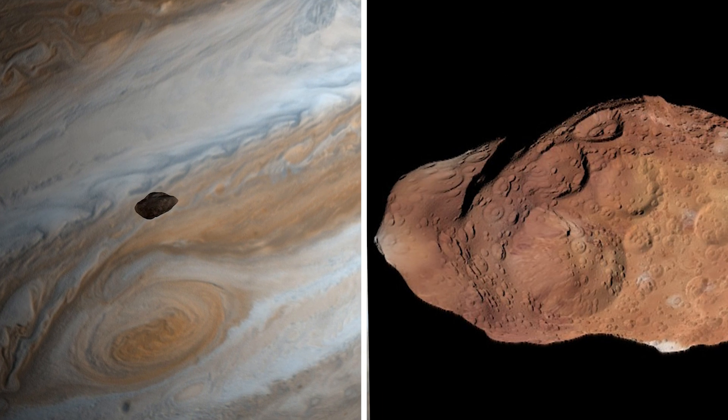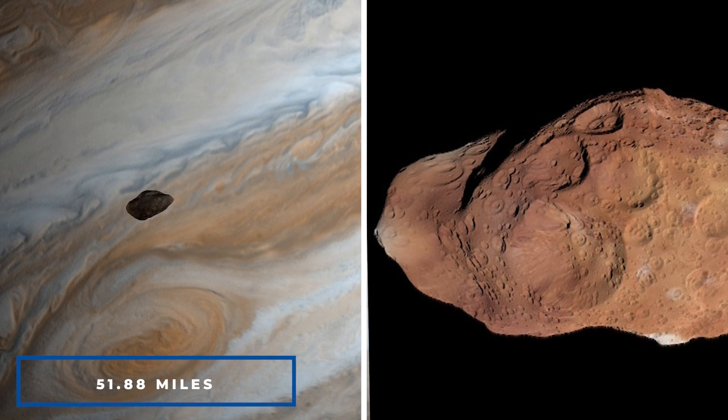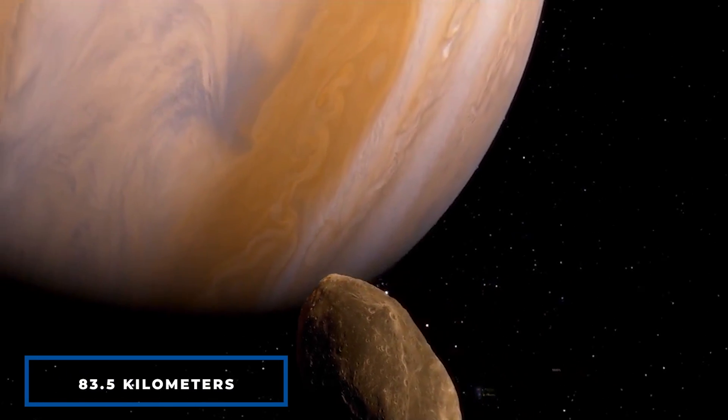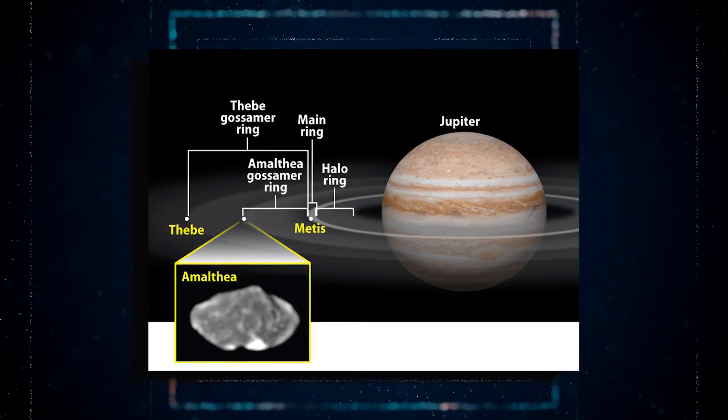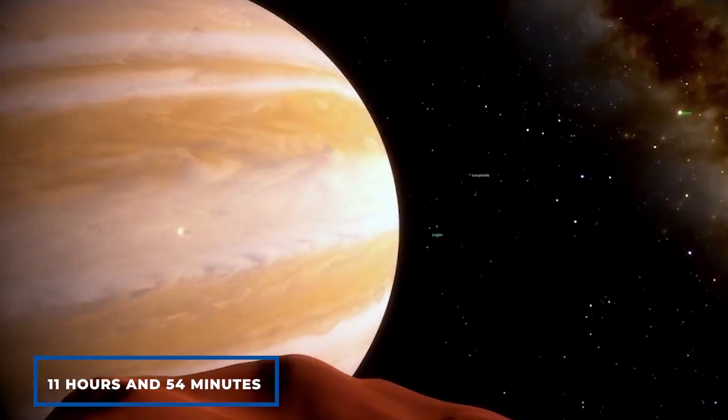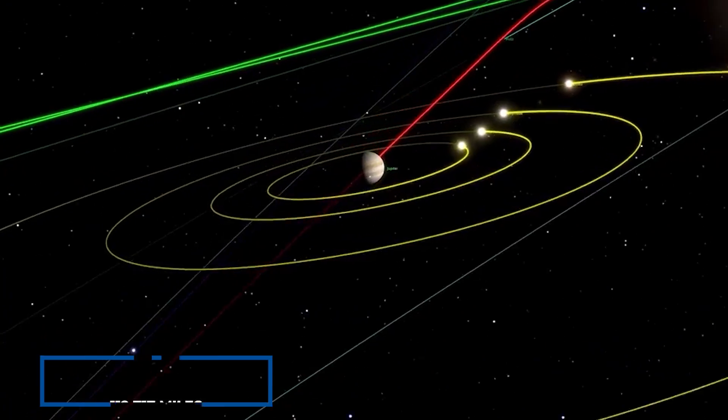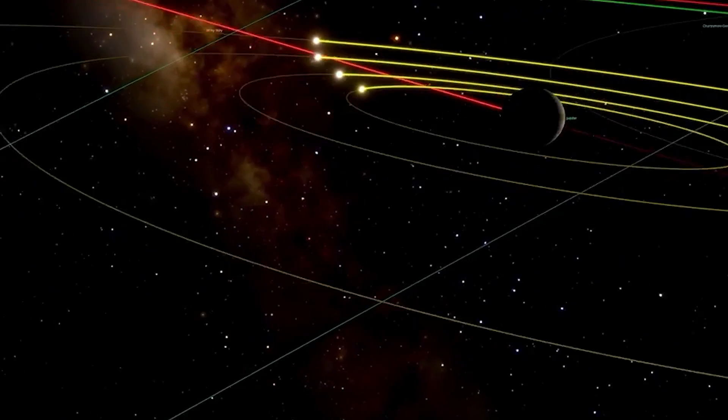According to NASA, it is a rocky body with a mean radius of roughly 51.88 miles. It has a potato-like form, belongs to the inner moon group with Metis, Adrastea, and Thebe, and circles Jupiter in 11 hours and 54 minutes at a distance of 112 to 717 miles, or 181 to 400 kilometers.